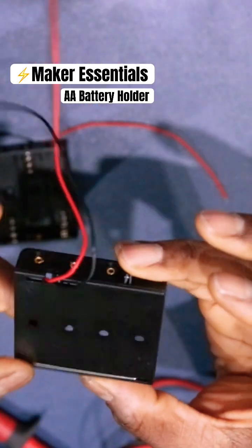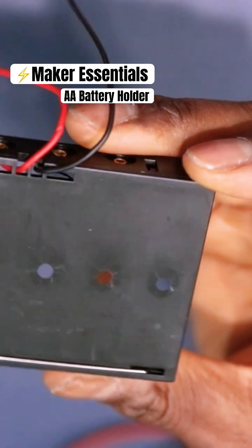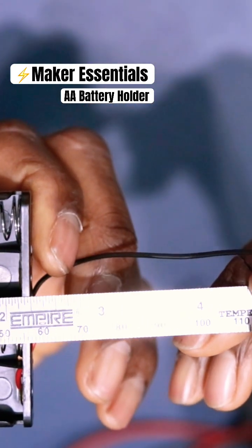These QTTAC battery holders are great if you want to add four AA batteries to your circuits. They come with four mounting holes and they're about two and a half inches by two inches wide.